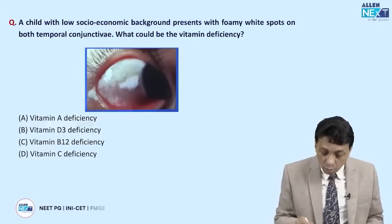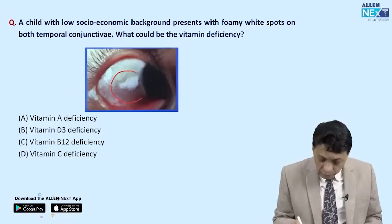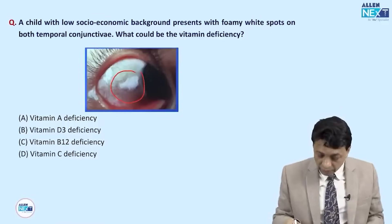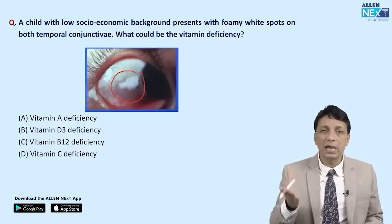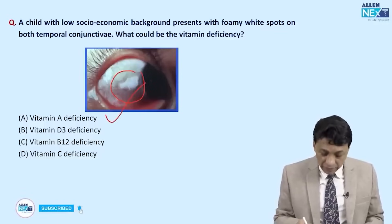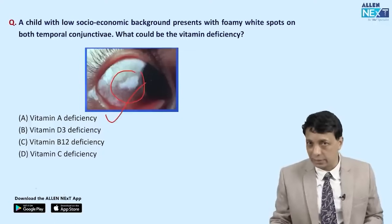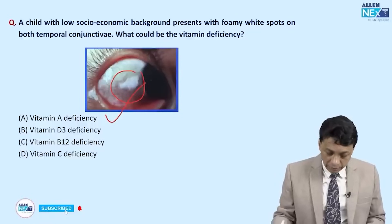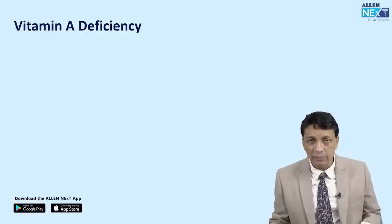A child with low socioeconomic background presents with foamy white spots on both temporal conjunctivae. These are classically Bitot's spots — a very specific sign of vitamin A deficiency. The answer is vitamin A deficiency. A single injection of vitamin A causes Bitot's spots to disappear in about two weeks, melting away as though exposed to hot sun.